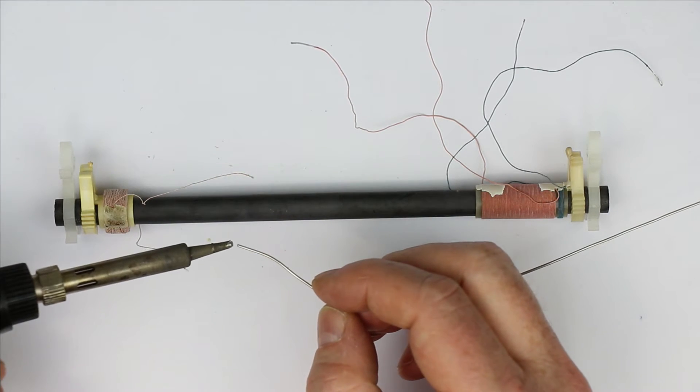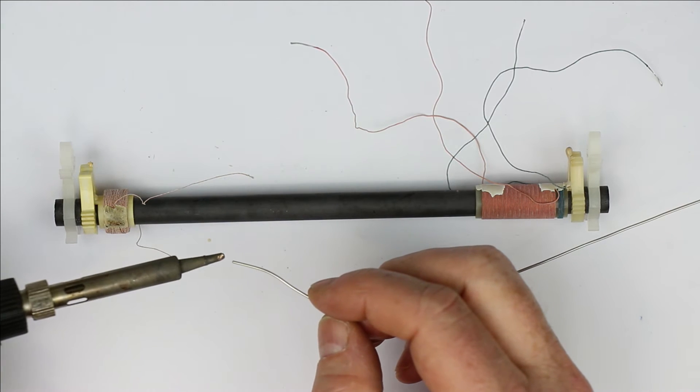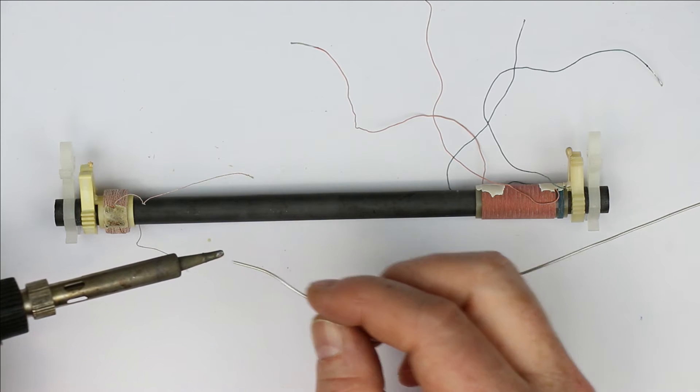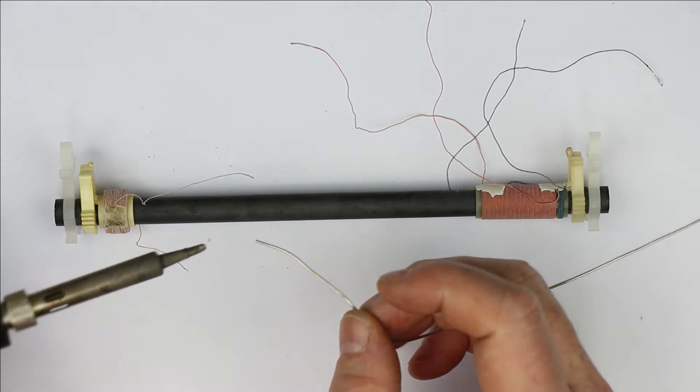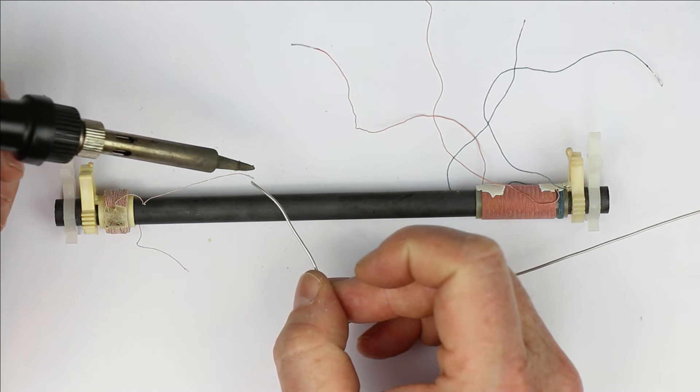Now, then you take a blob of solder. And it should be, of course, electronic solder with a high degree of flux. In this case, we have 3% flux inside the solder.